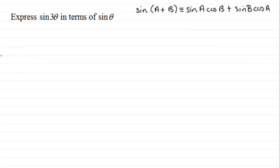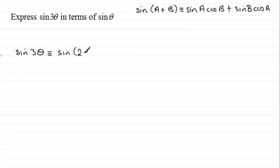The identity is: sin(A + B) is identical to sin(A)cos(B) + sin(B)cos(A). We start by writing sin(3θ) as sin(2θ + θ). In my example, A represents 2θ and B represents θ.